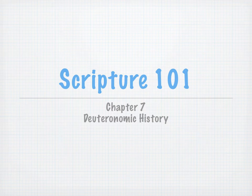Deuteronomic history is a term that modern scholars give to the six books in the Old Testament that deal with Israel's history from the time it entered the Promised Land, under the leadership of Joshua, until the moment it lost possession of the land.